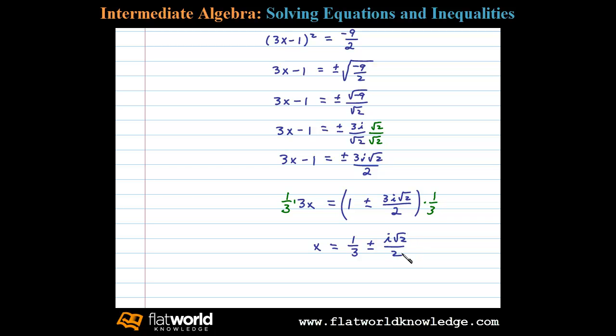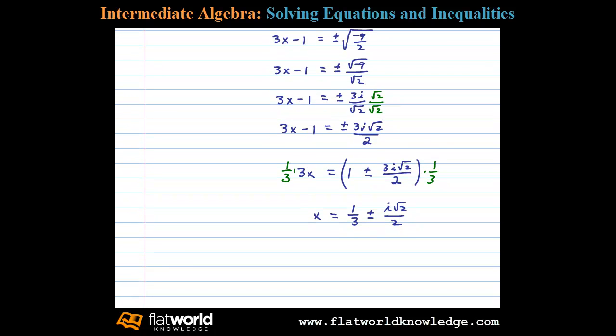Now here we have two complex solutions and we want to present our answer in standard form a plus bi. So in this case I'll write 1 third plus or minus the square root of 2 over 2 times i.